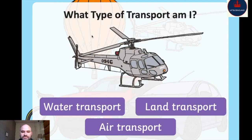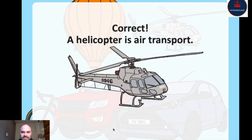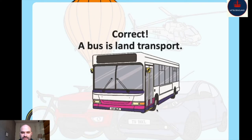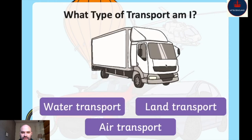We have a helicopter here. A helicopter goes by air transport — not land and not water. And then we have a bus, very familiar, similar to the buses in Prague. A public transport bus goes by land — bus is land transport. And here is a lorry. A lorry travels by land.